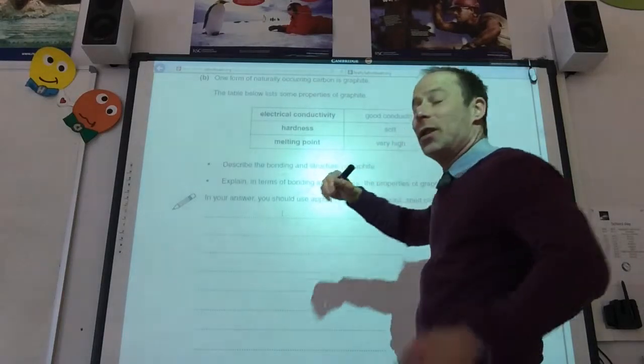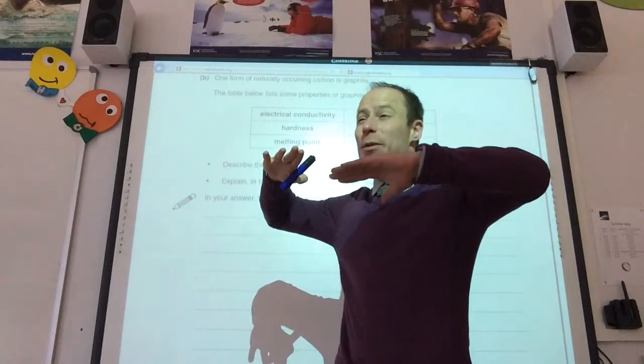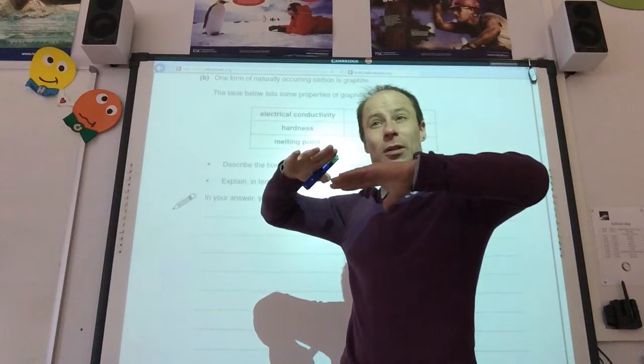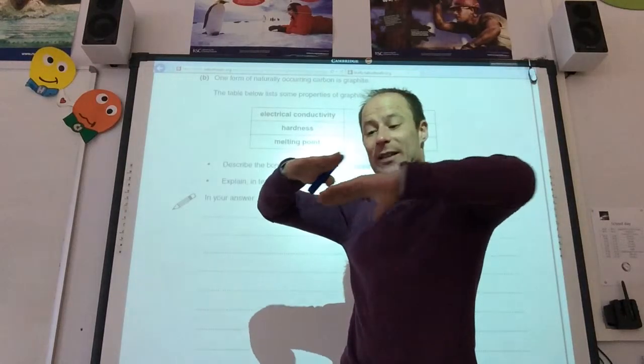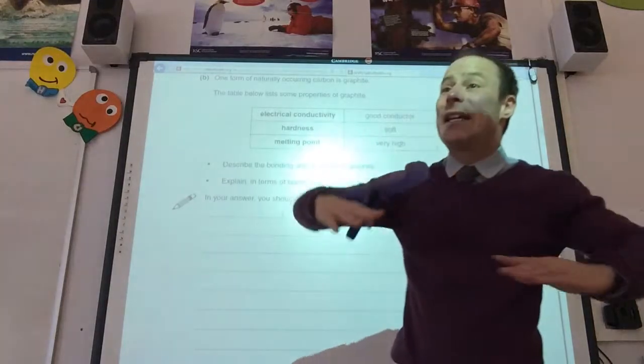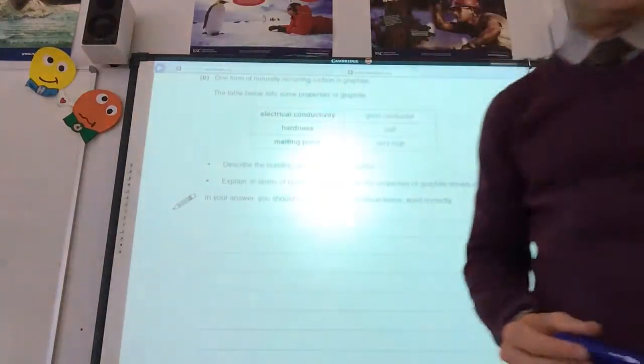It's soft. The layers, what type of attraction are between the layers? What type of force? Van der Waals force is between the layers. So, the layers can easily slide over each other because there are weak van der Waals forces between the layers.